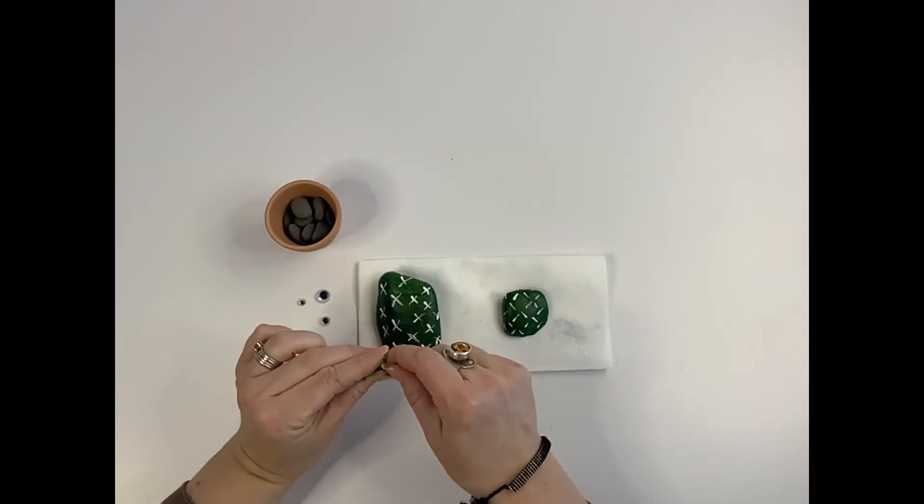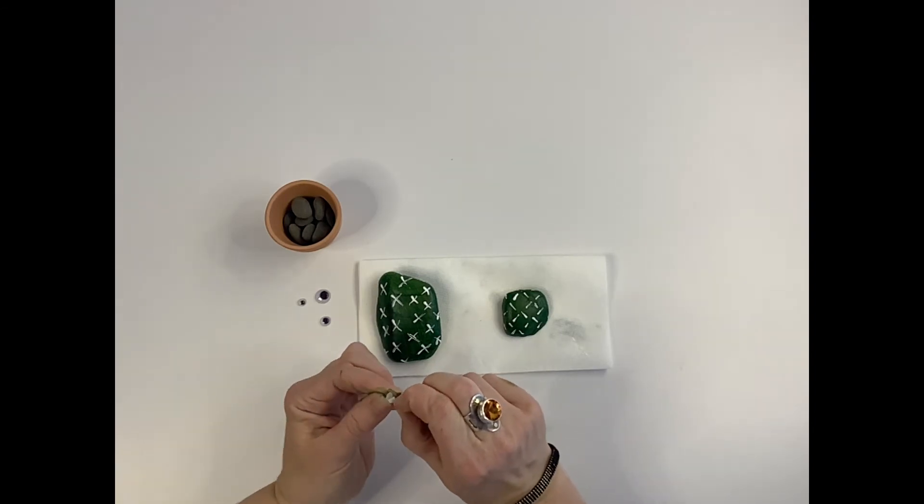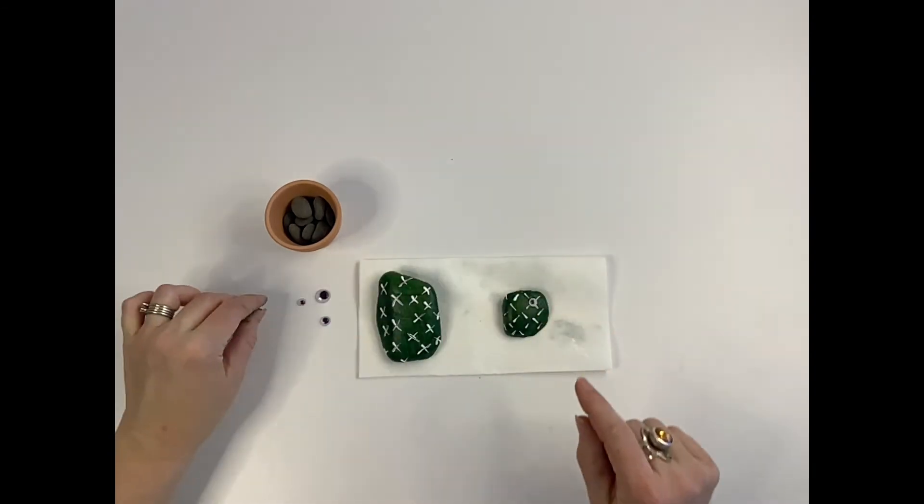Once your cactus is dry, decide where to position the googly eyes. Be sure to press the eyes firmly into place.